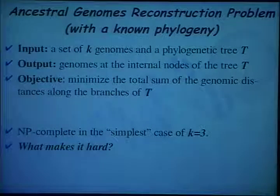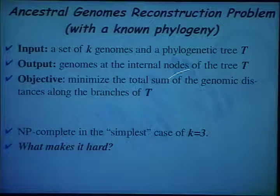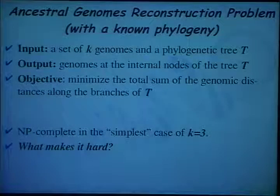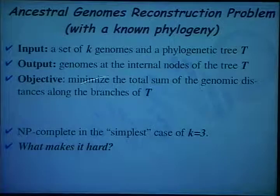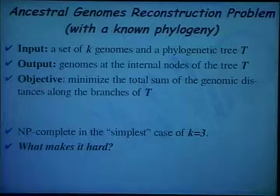Let me formalize the problem for the distance-based method of reconstructing ancestral genomes. The input is a set of K genomes and a phylogenetic tree. We need to produce genomes at the internal nodes of the tree, with the objective of minimizing the total sum of all genomic distances along the branches. The problem is NP-complete even in the simplest case.